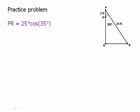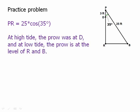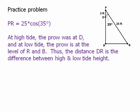Well, PR, that's not exactly the length that we're looking for. The question asked very specifically, the change in level between high tide and low tide. So at high tide, the prow of the boat was at the level of D, was at the level of the surface of the dock. And at low tide, the prow is at the level of R and B, that horizontal line at the bottom of the triangle. So what we need, the change in level, is DR. DR is the difference between high tide and low tide.